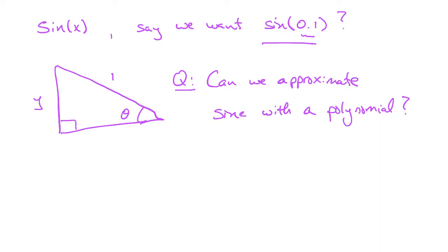People ask: can we approximate something like sine with a polynomial? Polynomials are nice, easy functions — evaluating them is straightforward, so if we could find a polynomial that approximates sine, we could just plug values in. We know sine is not a polynomial, so our approximation may only be good within a certain limit, but we could still approximate it close to a value we're interested in.